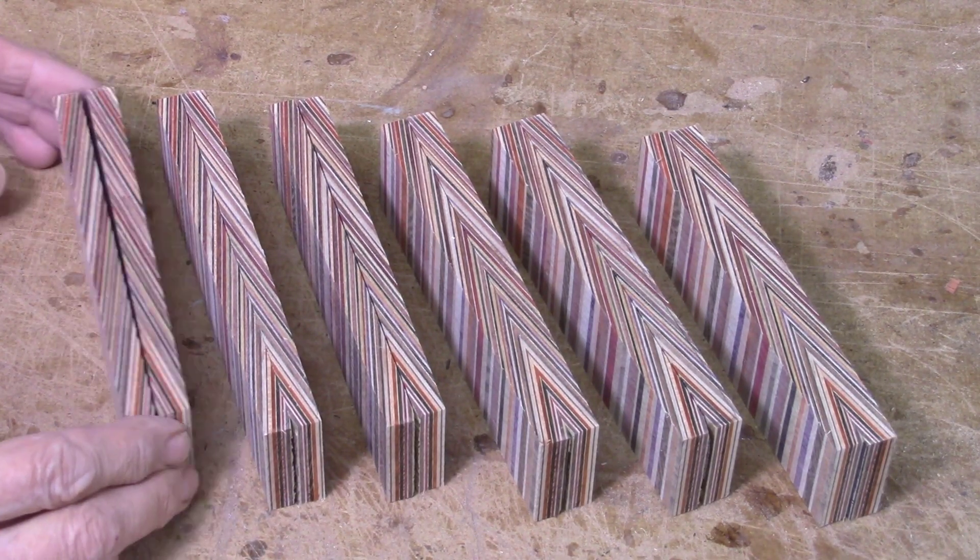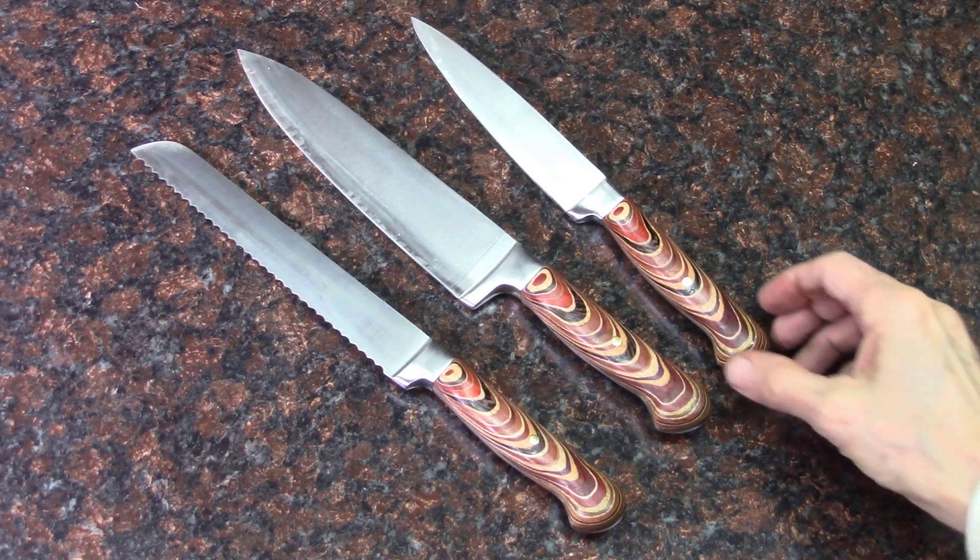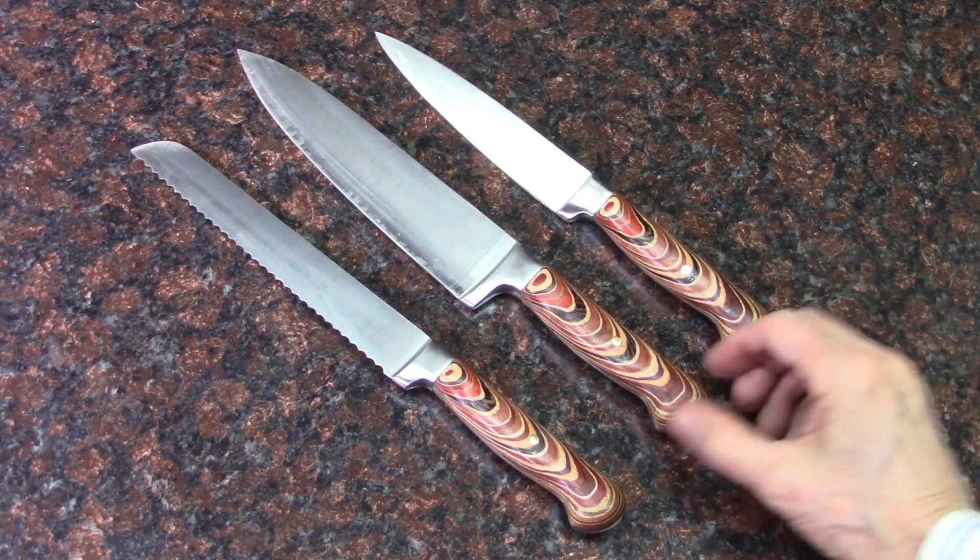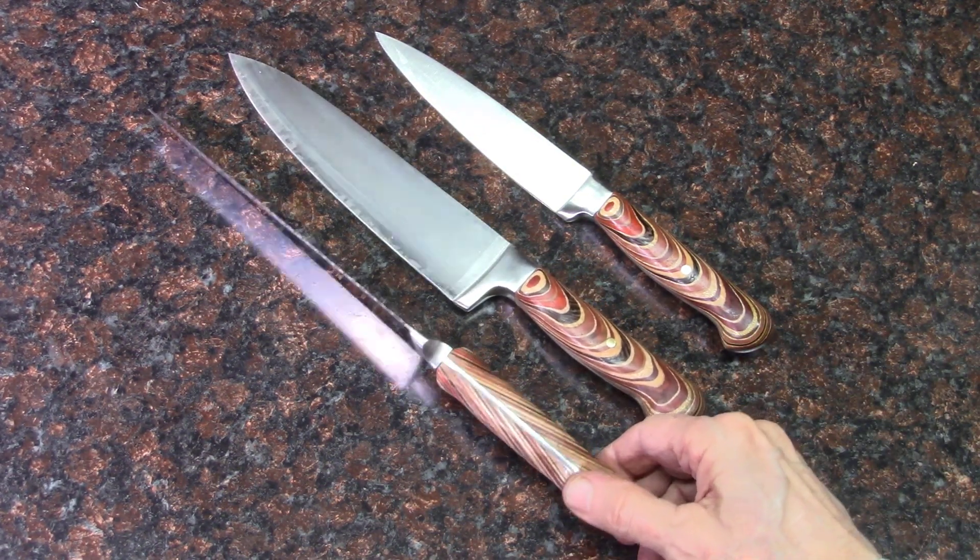For this project I made six sets of matched knife handles. There's two scales for each knife handle. And here's my resulting three knives made with the angled pattern on the handles.